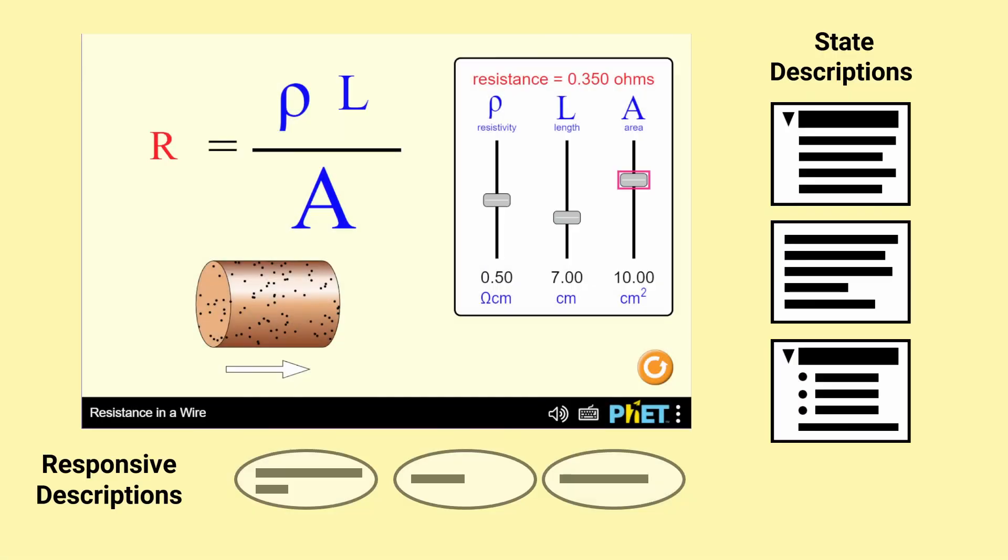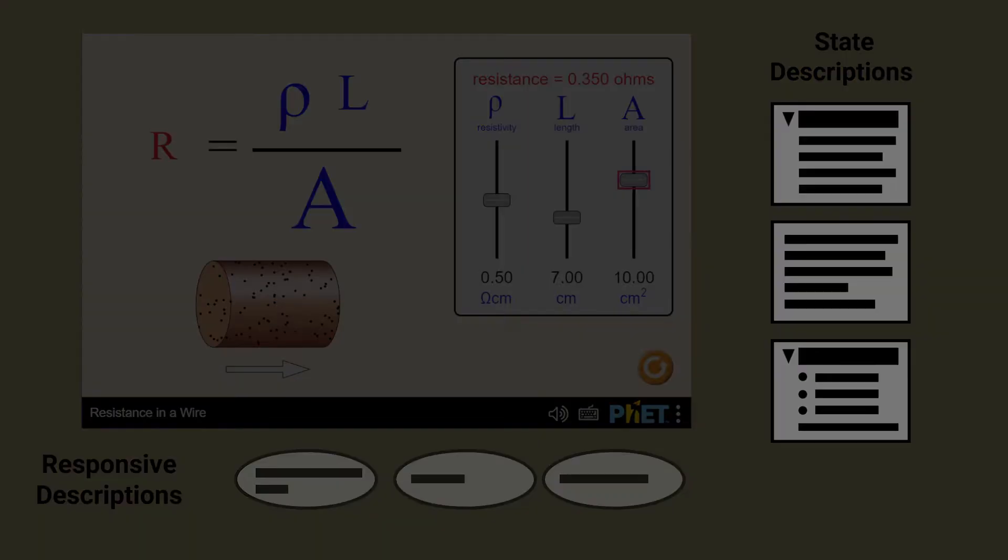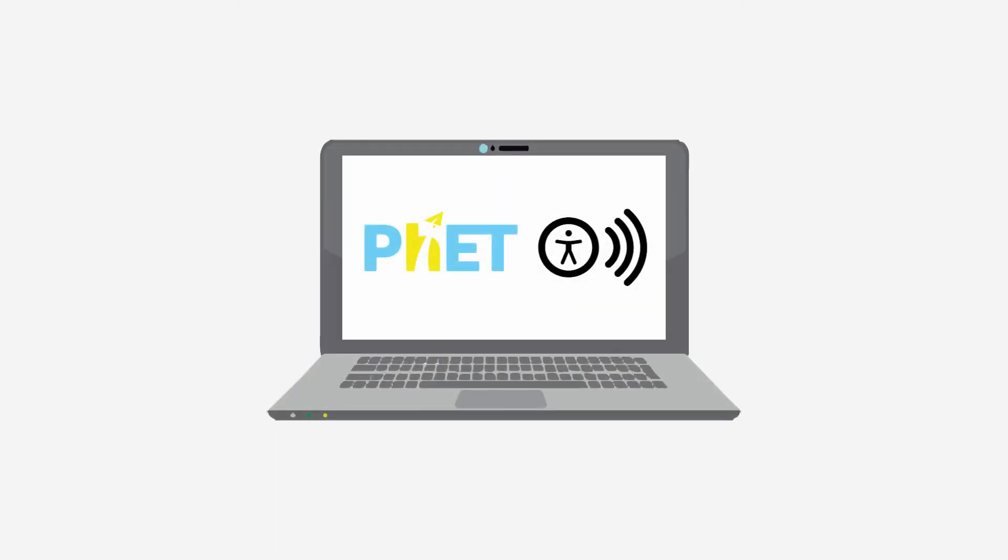Together, state descriptions and responsive descriptions provide the learner with simulation specific information, providing non-visual access and a rich interactive learning experience with the simulation. The interactive description is not provided visually in the simulation. It's embedded in the simulation and delivered in parallel with the visual simulation using screen reader software.